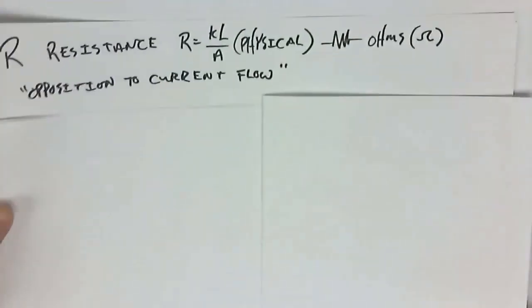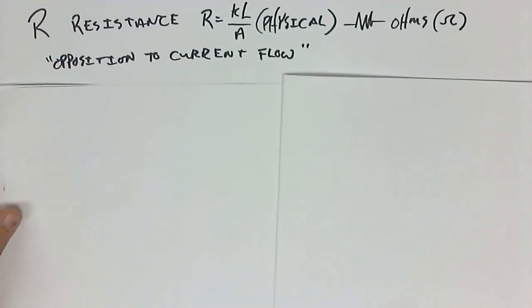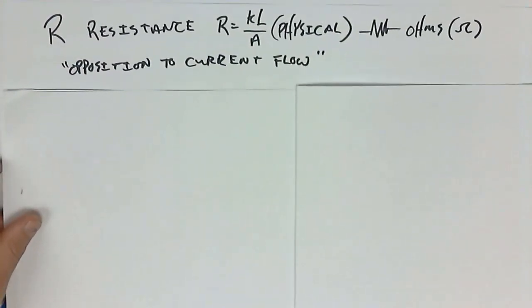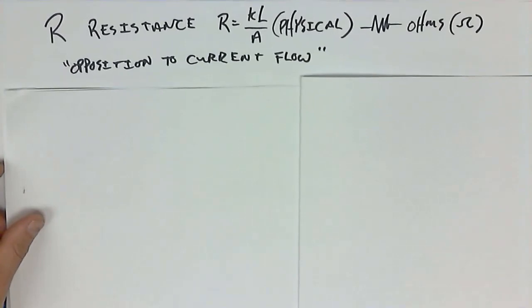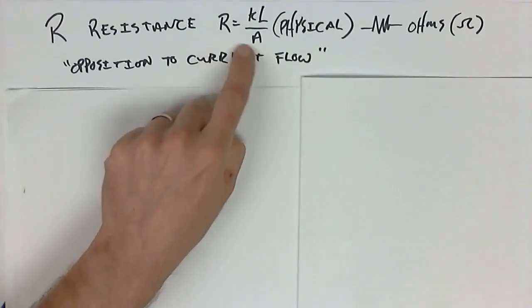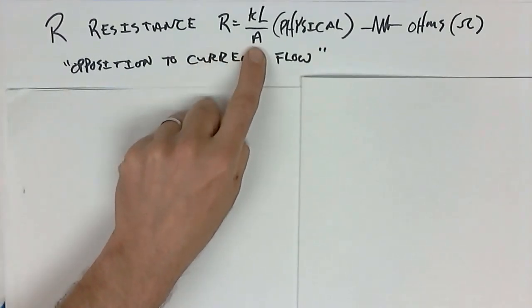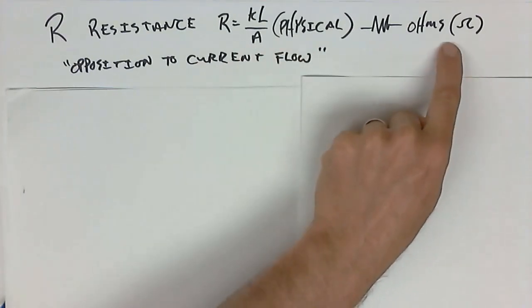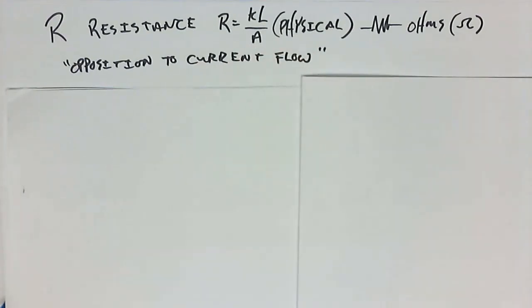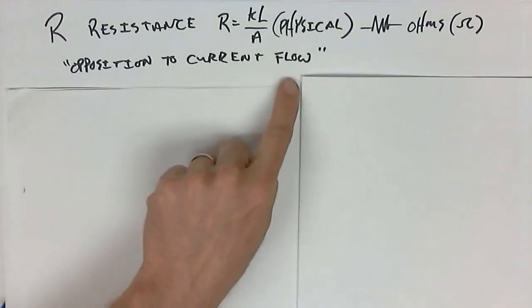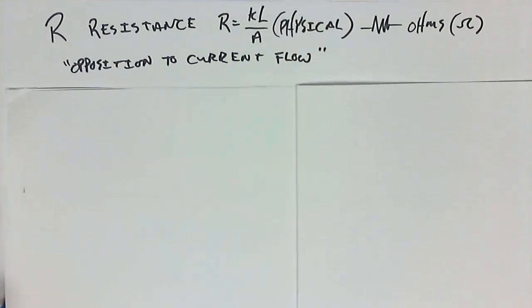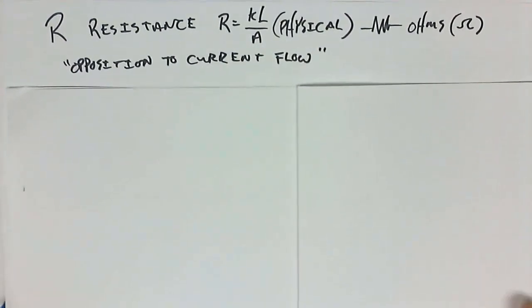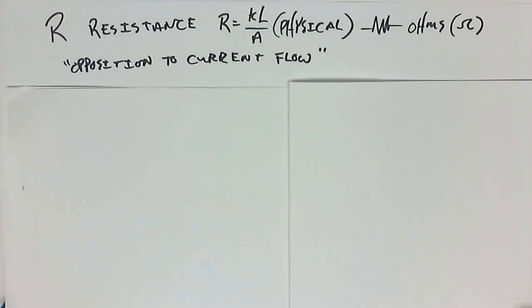First things first, resistance. We always start with the simplest first and then work our way along. R is equal to K factor L over A. It's a physical property, measured in ohms. It is opposition to current flow, and there is no difference between an AC and a DC circuit for this. We only have one property to worry about.